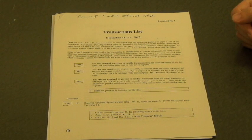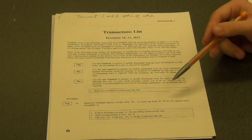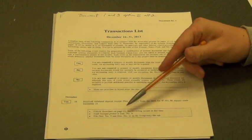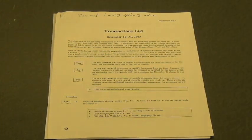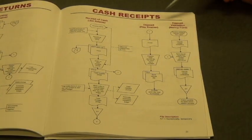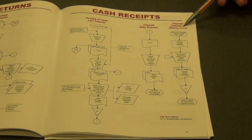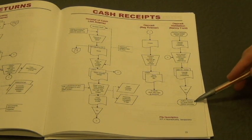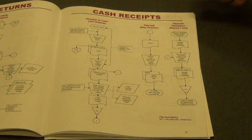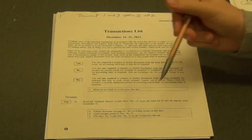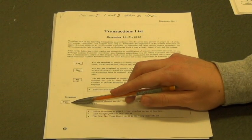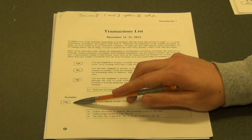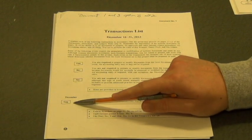In this video we will do the first three transactions to help give you an idea of how to get started with the SUA project. Before you actually do a transaction, look down and see the flowchart associated with it. It says to follow the flowchart on page 21. Look to the left of the transaction before you do it and see if it says yes or no. If it says yes, you are required to prepare or modify documents from the loose document set for this event. If it says no, you are not required to.